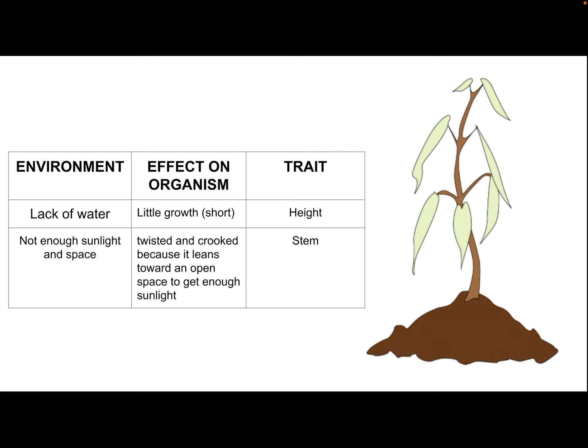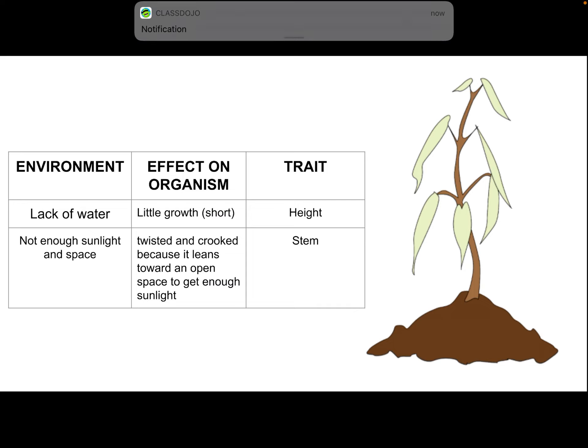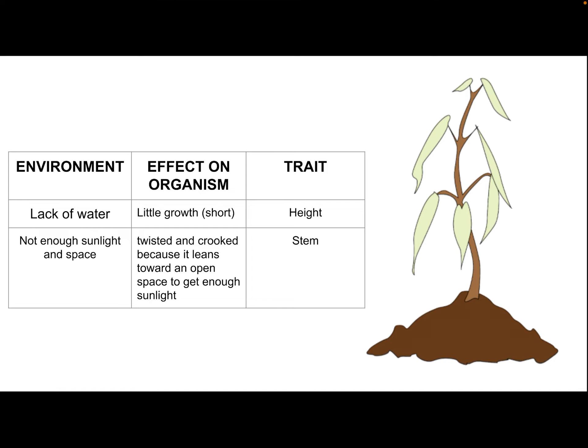Now let's look at a not-so-lucky plant with a much different environment. This plant has a lack of water, so when it doesn't have enough, it doesn't grow very tall — it's very short. That lack of water affects its physical trait of height. It also did not have enough sunlight and space; too many things were crowding it. Because of that, it's going to be twisted or crooked, and it could lean toward an open space trying to get sunlight — clearly affecting the stem. If a plant has to twist and bend just to find sunlight, its physical traits are being affected.